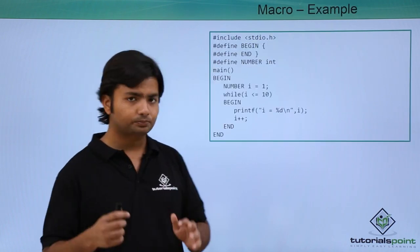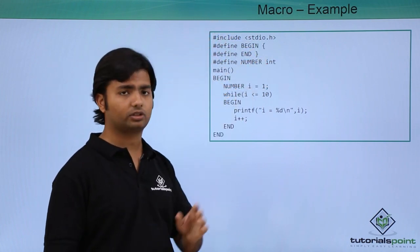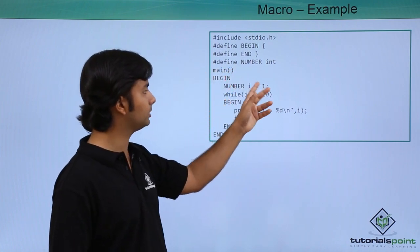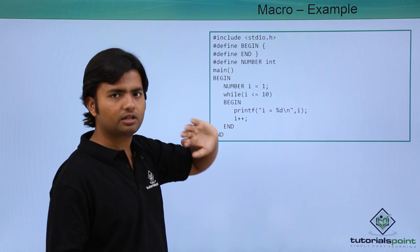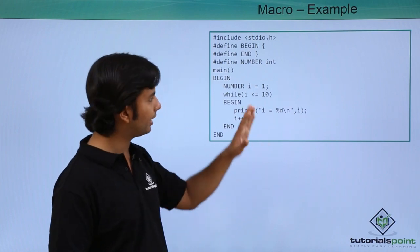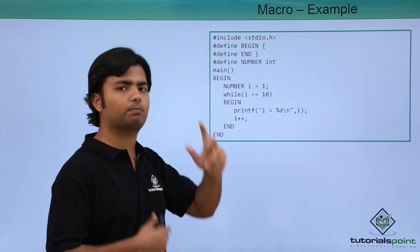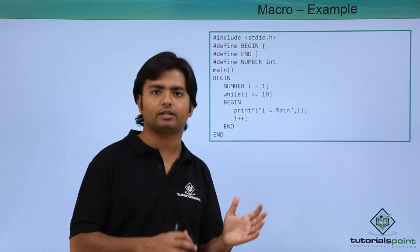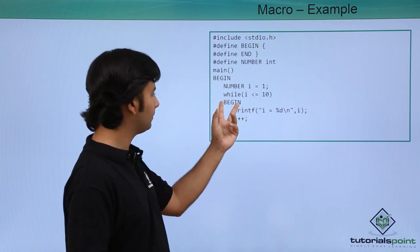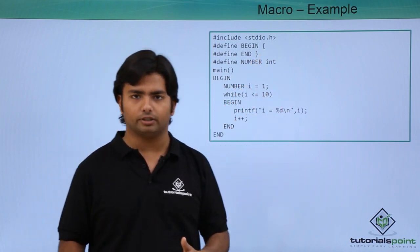Here we have used `#define begin` with a value of opening curly brace, `#define end` with closing curly brace, and `#define number int`. The capitalized names are the macro names and the values are the text they will expand to. So in code, `begin` gets replaced by the opening curly bracket before actual compilation, and `number` gets replaced by `int`, specifying integer type.